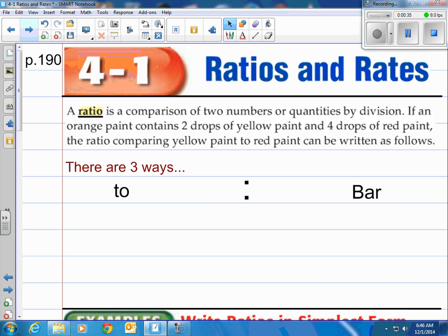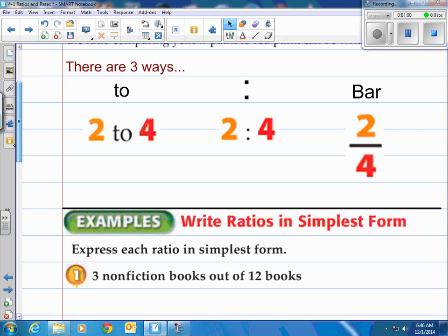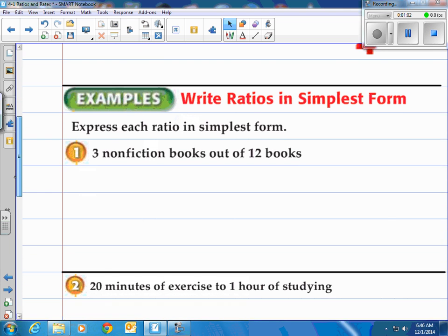This would be how you write a ratio. There's three different ways. You can use the word 'to' and it would look like this: two to four. Or you can use the colon: two colon four. Or use the fraction bar which would be just two fourths. Those are the three ways to write a ratio.